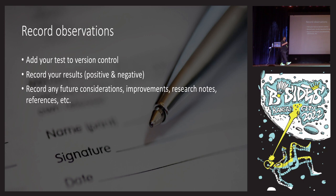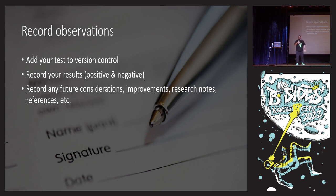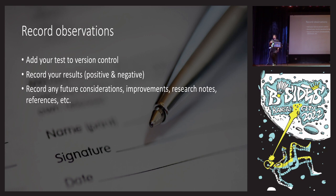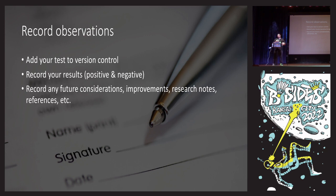You need to record what happened no matter what. Maybe you ran it and it blocked everything — great, still log it. Because six months down the road, you're going to forget whether you tested that. You also need to record your results — both positive and negative. If you just got domain admin in five seconds with all your security tools installed, you need to fix that. I recommend doing all of this in a central location — not just in your notebook or email. Put it in a central place, and record any future considerations, improvements, notes, and references so you or someone else on your team can look at it in the future.